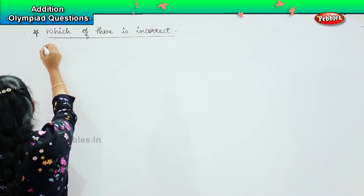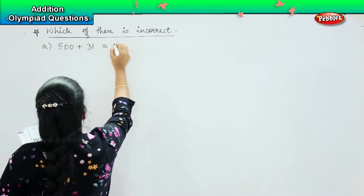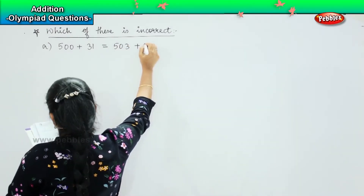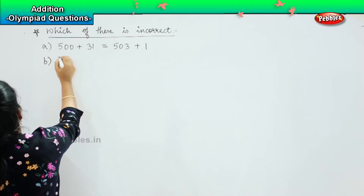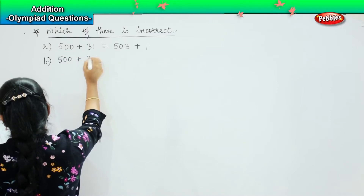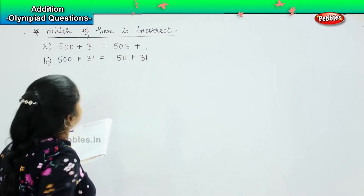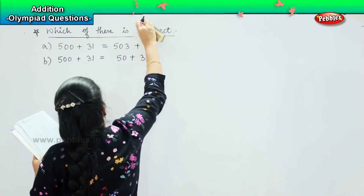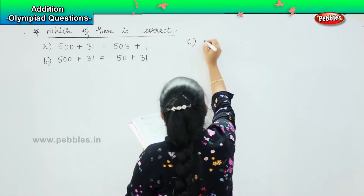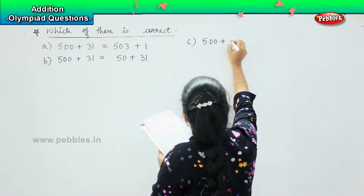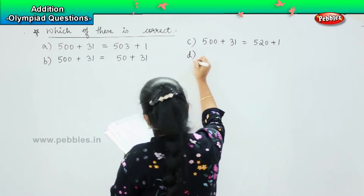Your options are: Option A, 500 plus 31 is equal to 503 plus 31 plus 1. Option B, 500 plus 31 is equal to 50 plus 31. Option C, 500 plus 31 is equal to 520 plus 1. And option D is none of these.